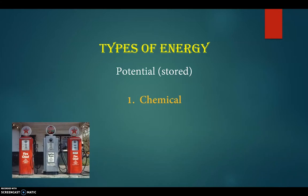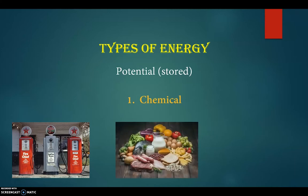One of the most important types of chemical potential energy is fuel. Whether it's gasoline, natural gas, propane, wood, or coal, all of these materials contain a large amount of chemical potential energy that can be released by burning or combustion. Equally important for us is food. Food has a lot of stored chemical potential energy. The units we use to measure it? Calories. The number of calories in a food item is simply the amount of chemical potential energy stored in that particular food.